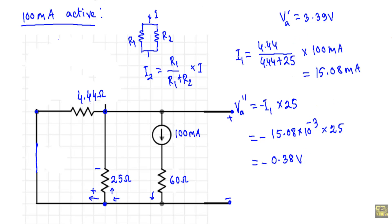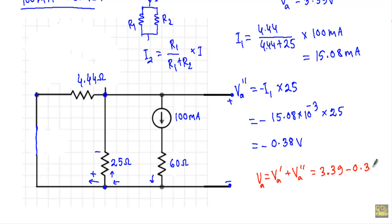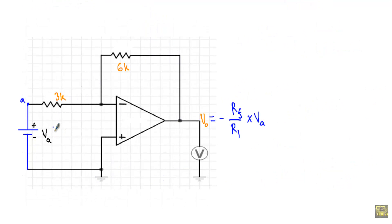Applying the superposition theorem: for the 4-volt source, VA prime = plus 3.39 volts; for the 100 mA current source, VA double prime = minus 0.38 volts. So VA is the algebraic sum of the two: VA = 3.39 + (minus 0.38) = 3.01 volts.